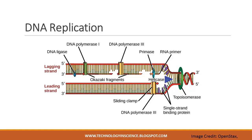An enzyme called helicase unwinds the DNA by breaking the hydrogen bonds between nitrogenous base pairs. ATP hydrolysis is required for this process because it requires energy. As the DNA opens up, Y-shaped structures called replication forks are formed. Two replication forks form at the origin of replication and extend bi-directionally as replication proceeds. Single-strand binding proteins coat the single strands of DNA near the replication fork to prevent them from winding back into a double helix.